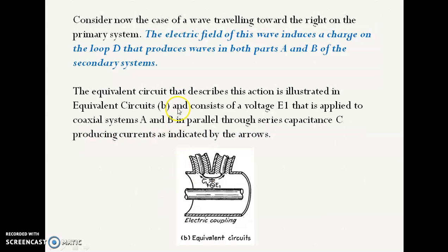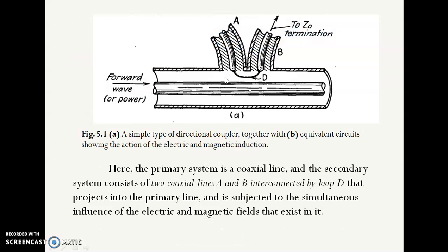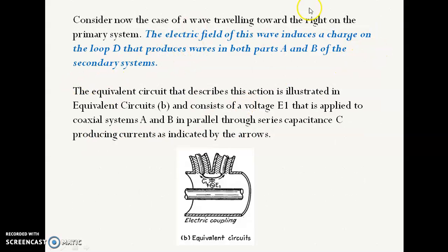Consider now the case of a wave travelling in the right direction. The directional coupler responds to a wave travelling in a particular direction. As the wave travels to the right, it affects the coupling loop D, which is the connection between the two systems. Electrostatically, the electric field of this wave induces a charge in the loop D — this is the electrostatic coupling.